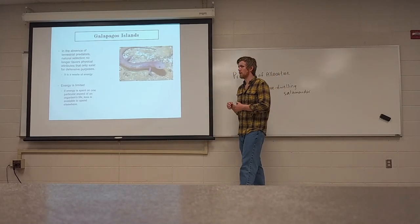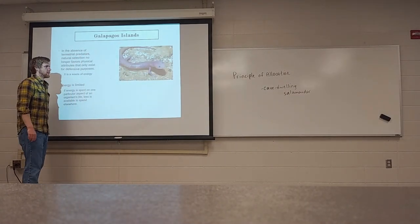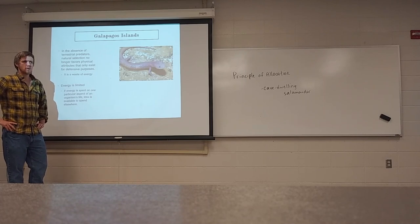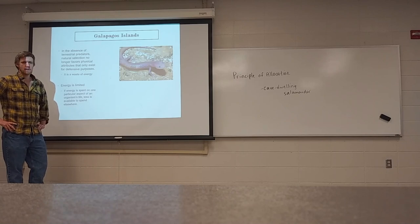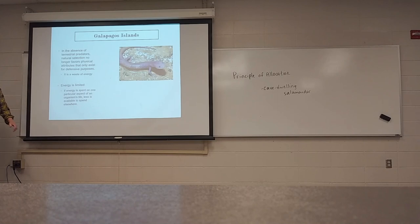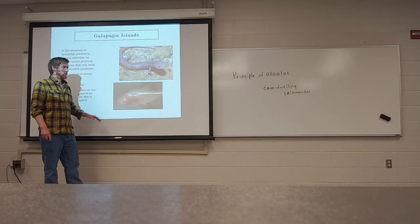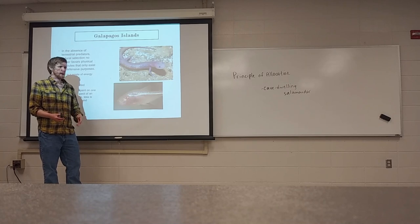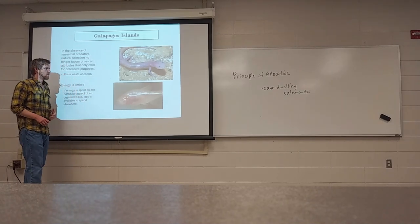If a salamander is born with a mutation causing strong, functioning eyes, that means it's devoting energy to something useless in the cave — it will not be reproductively successful, because it has less energy devoted to other senses that are useful. We see this same trend with a lot of cave species. This is a cave fish — no pigment, and no eyes at all. Again, a waste of energy. Natural selection is not going to favor that.